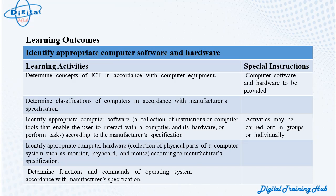Learning Activity 2: Determine classifications of computers by manufacturer's specification. Learning Activity 3: Identify appropriate computer software — a collection of instructions or computer tools that enable the user to interact with a computer and its hardware, performing tasks according to the manufacturer's specification. Learning Activity 4: Identify appropriate computer hardware — a collection of physical parts of a computer system such as monitor, keyboard, and mouse, according to manufacturer's specification.